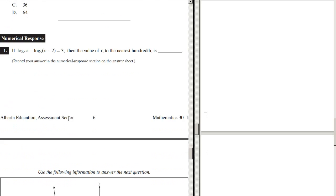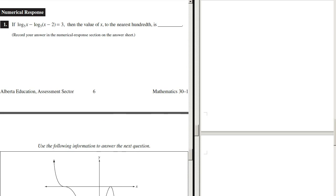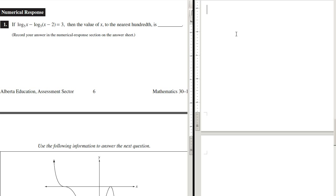Alright, moving right along here. Numerical response. If log base 5 of x minus log base 5 of (x minus 2) equals 3, then the value of x to the nearest hundredth is... Alright, so we have two separate logs. This log and this log. And then it's a subtraction of two logs.